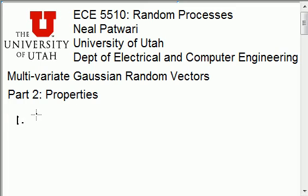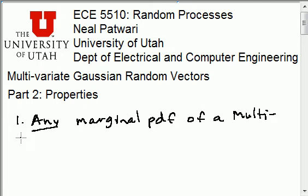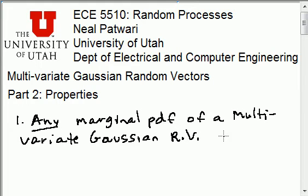The first property is that the marginal PDFs, when we have a Gaussian random vector PDF and we take a marginal PDF, that marginal PDF is also going to be Gaussian. So the statement is: any marginal PDF of a multivariate Gaussian random vector is also a Gaussian random vector.